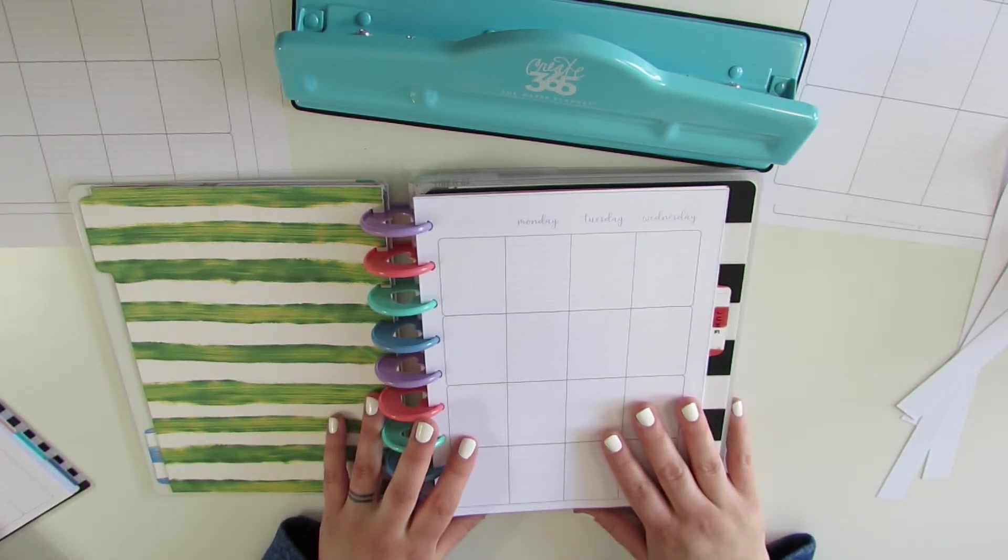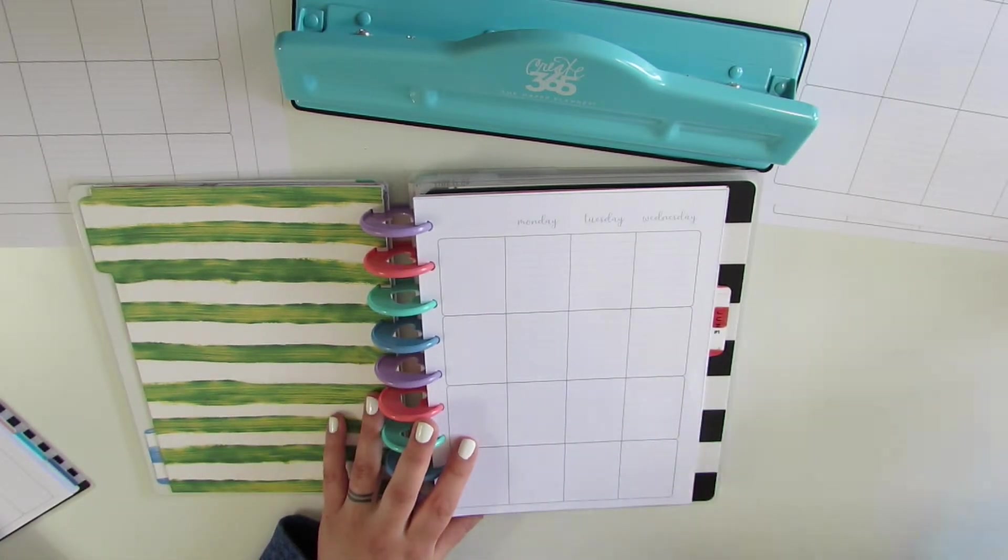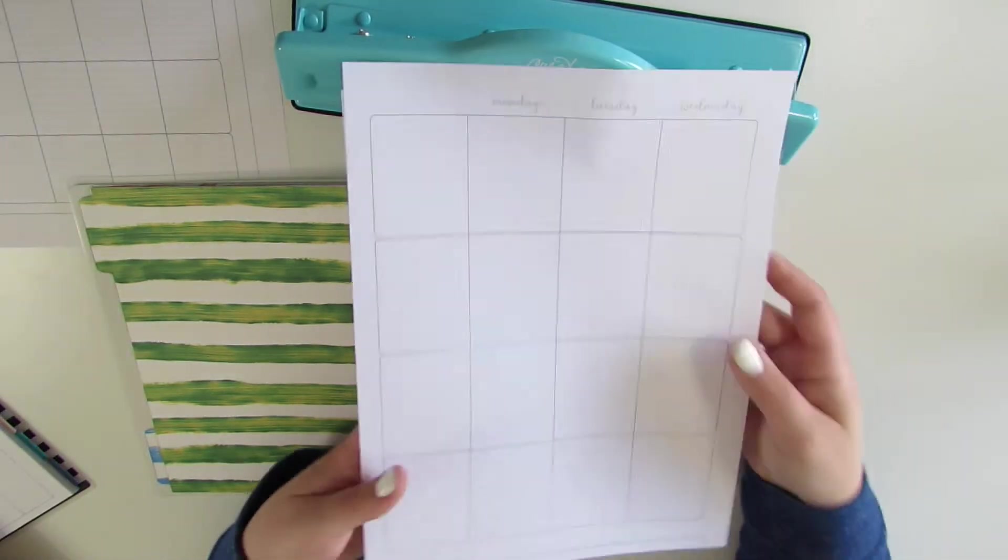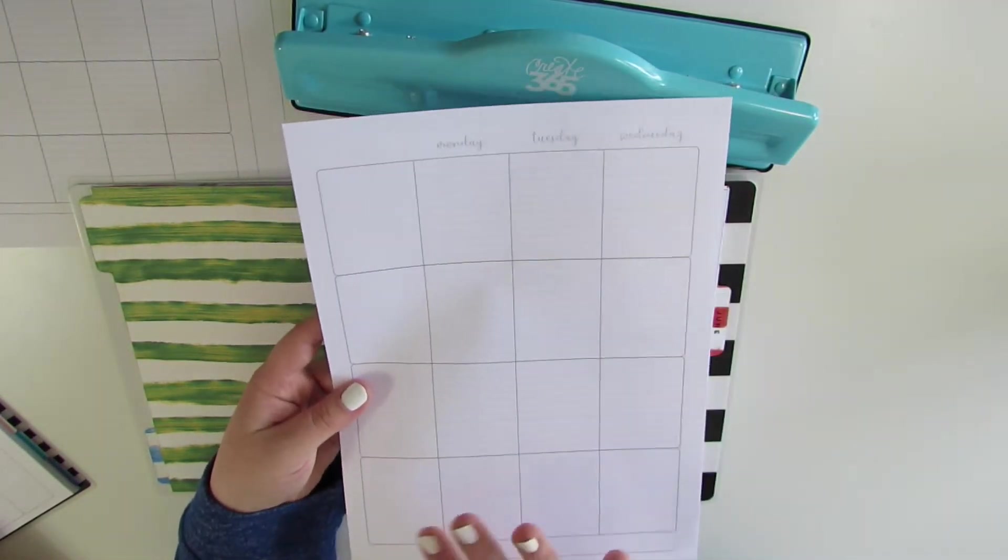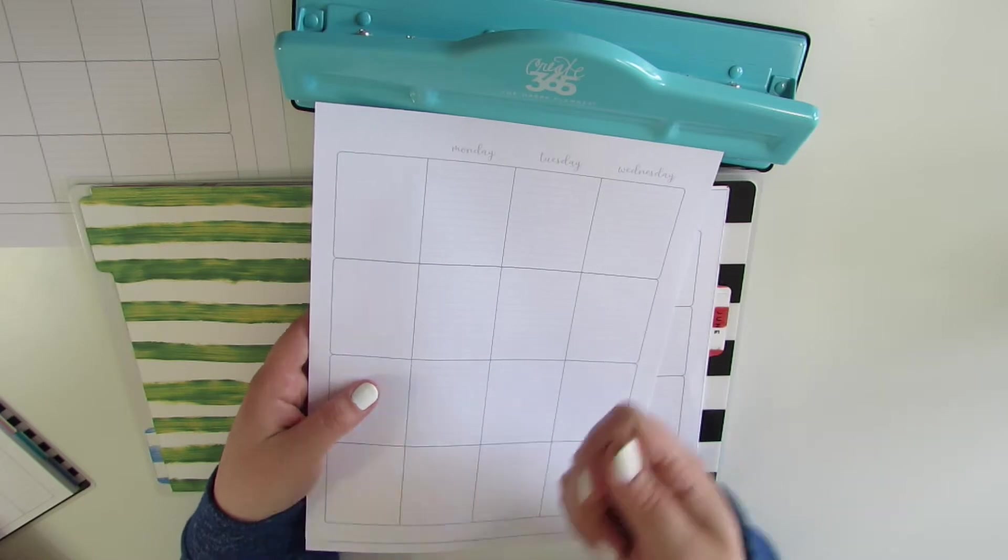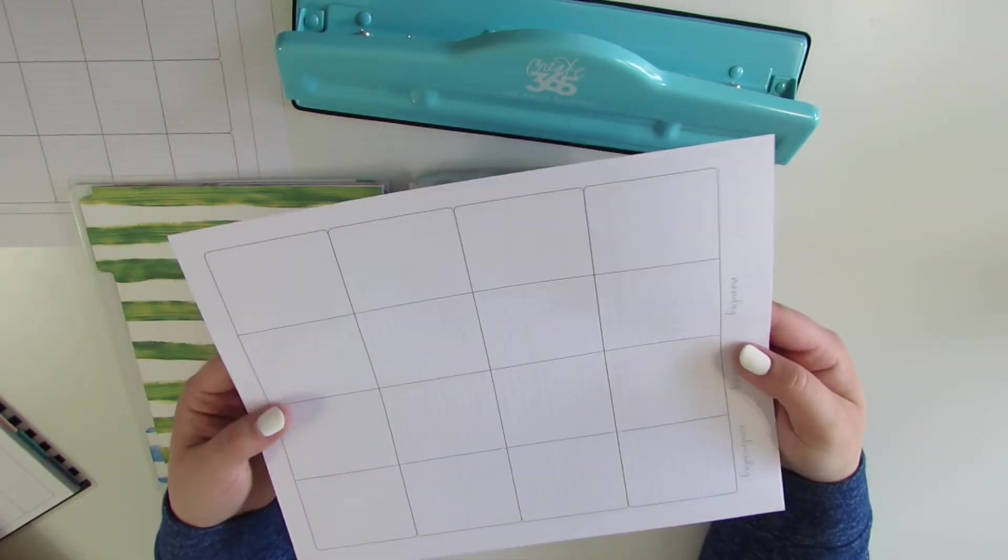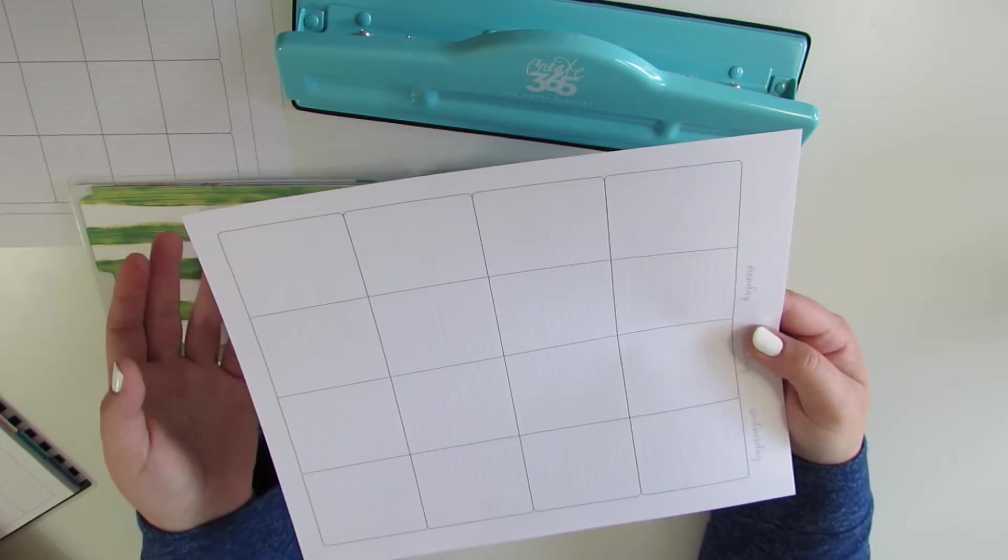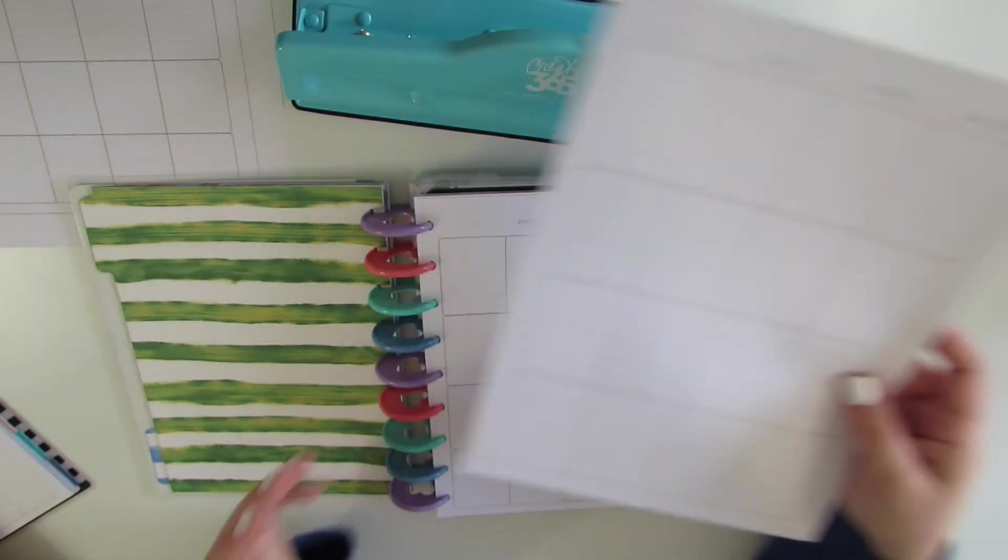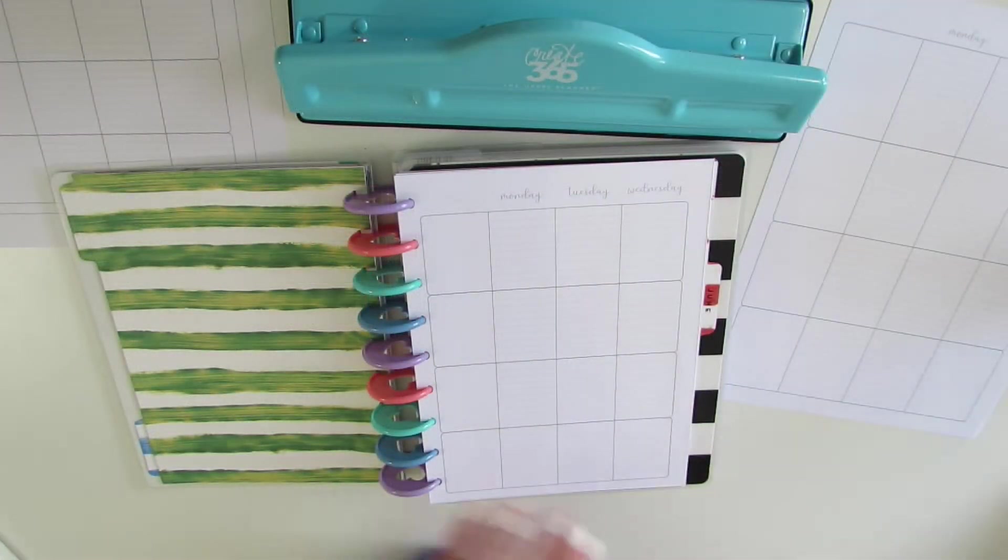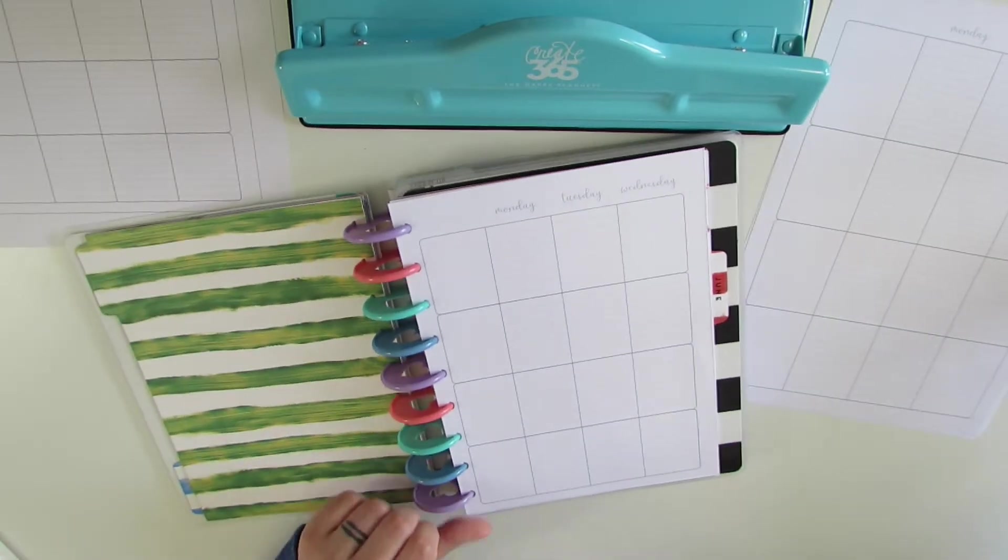And again, this works for the Happy Planner, but the one that's made for the Big Planner is the full sheet of paper that doesn't need to be cut down to size. You just keep the entire page and just hole punch that. This one will fit in the Big Planner or it will just fit in a regular three-ring bound notebook.